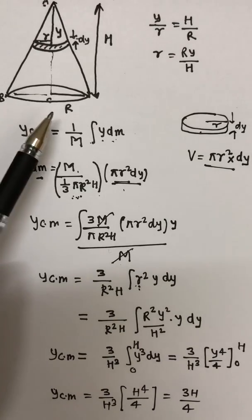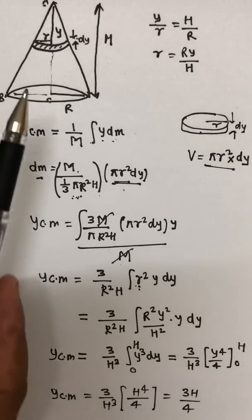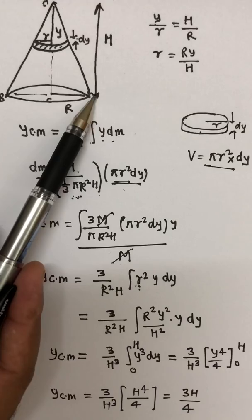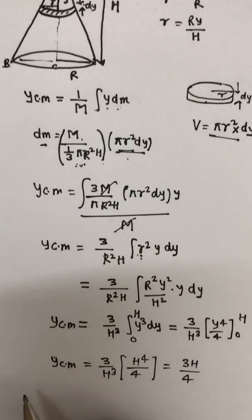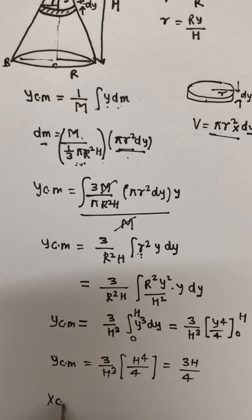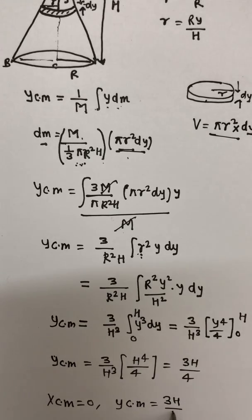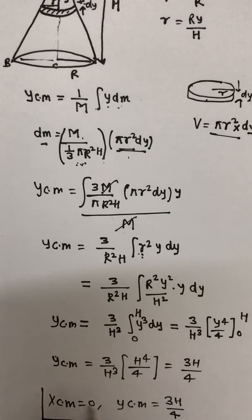This cone is symmetrical about the x-axis, meaning the left-side mass equals the right-side mass, so X_cm equals 0. But Y_cm equals 3H divided by 4. This is the center of mass of a solid cone.